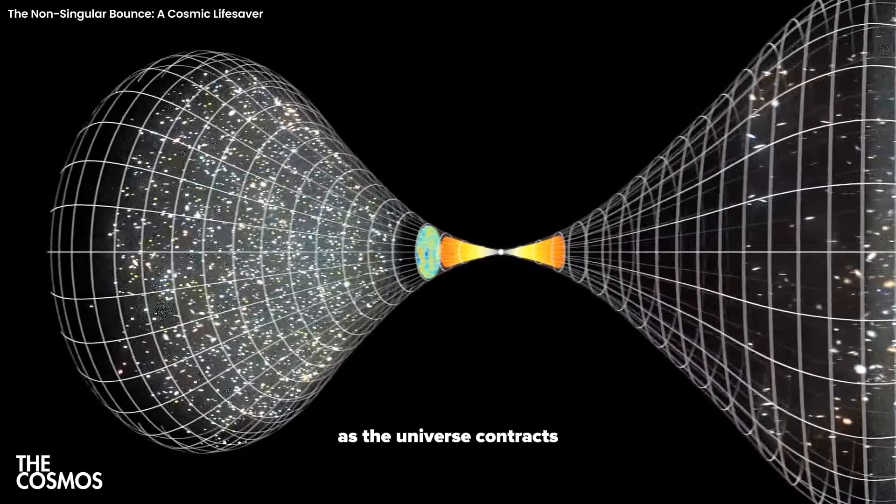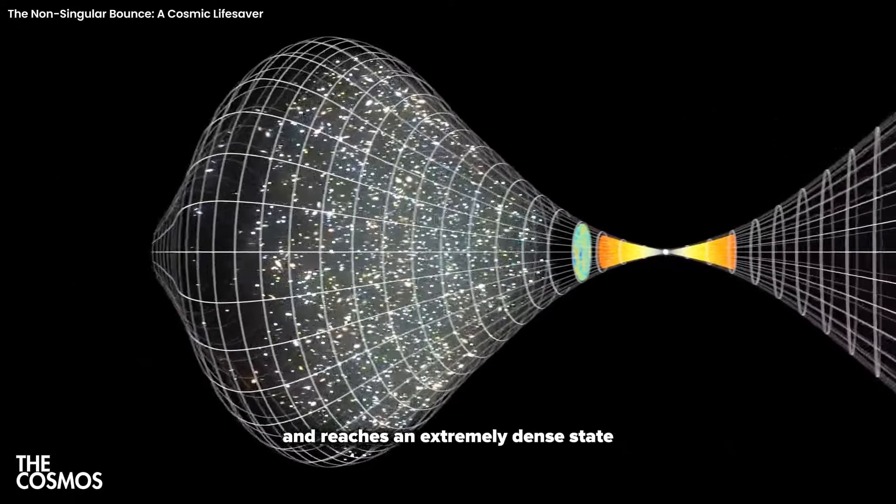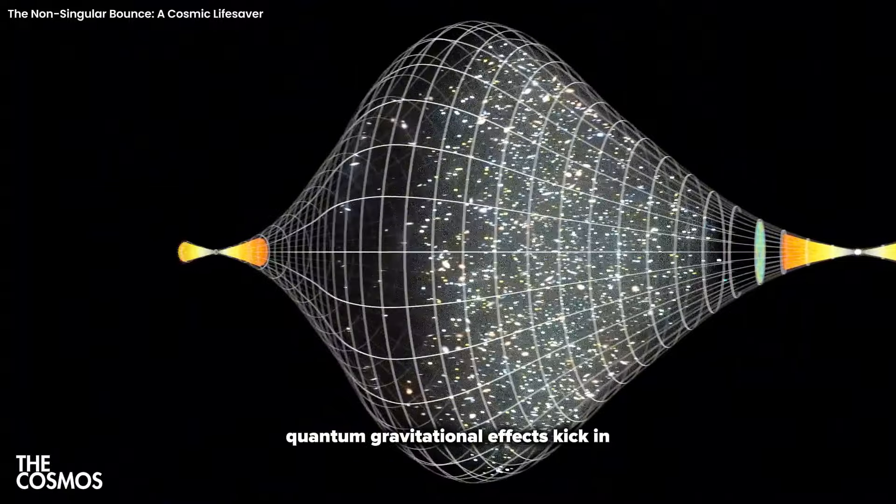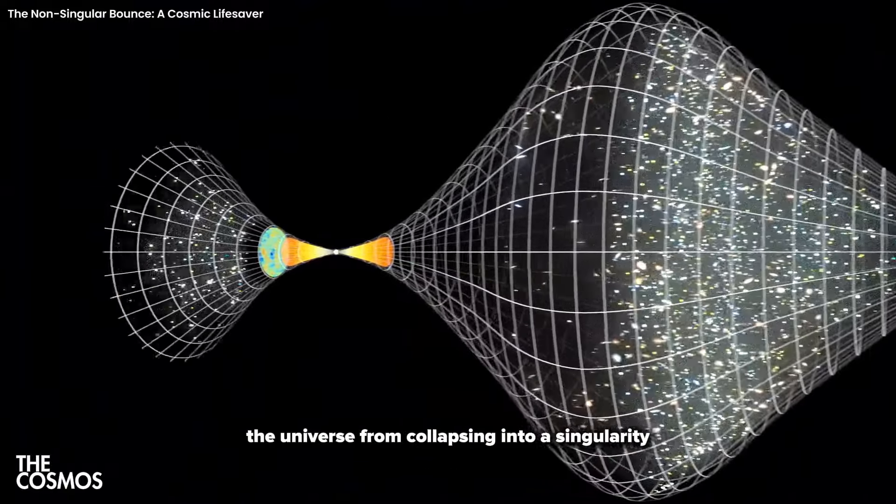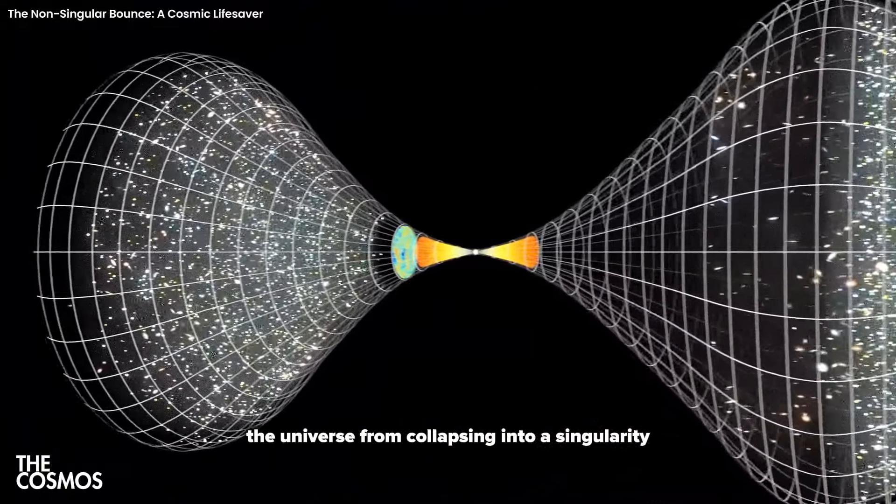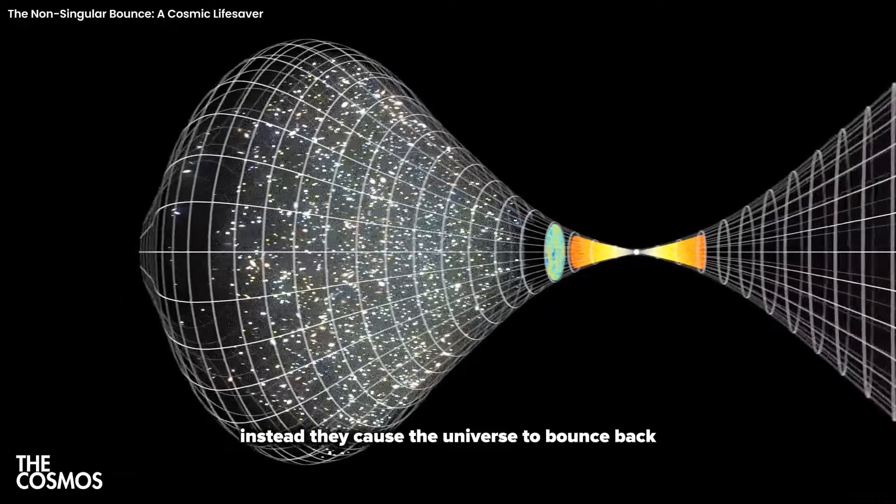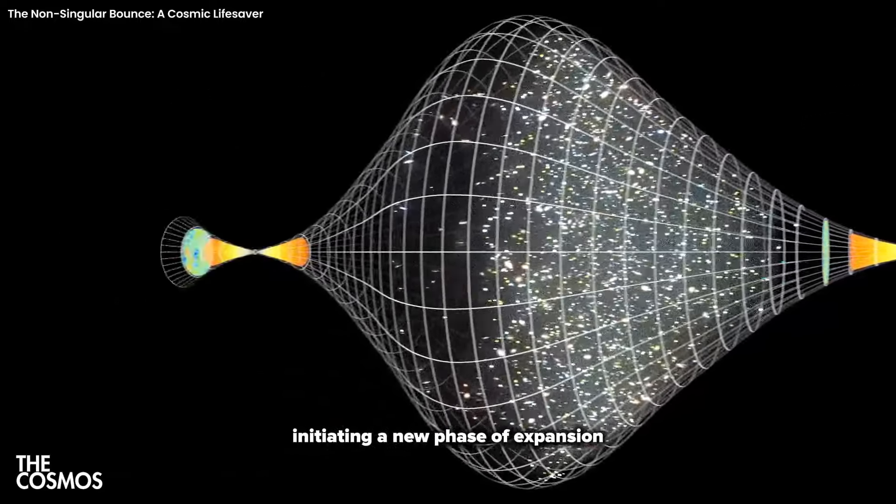As the universe contracts and reaches an extremely dense state, quantum gravitational effects kick in. These effects prevent the universe from collapsing into a singularity. Instead, they cause the universe to bounce back, initiating a new phase of expansion.